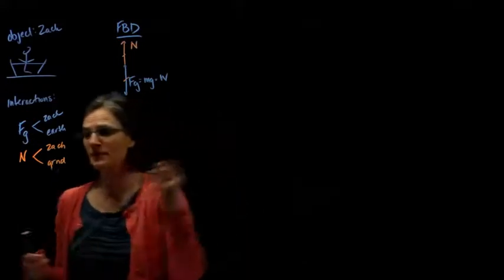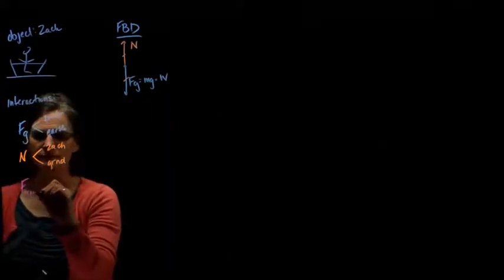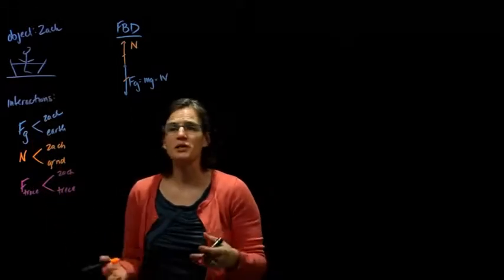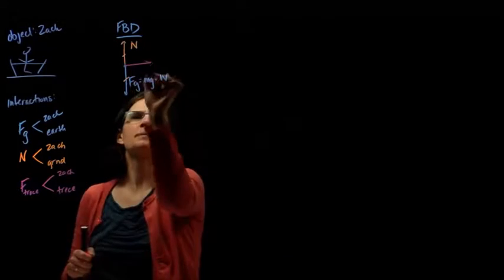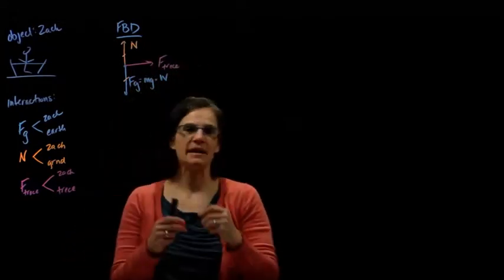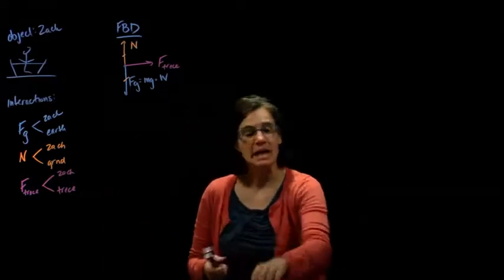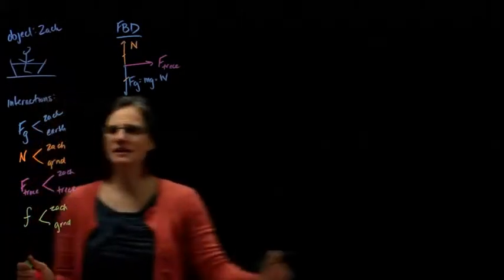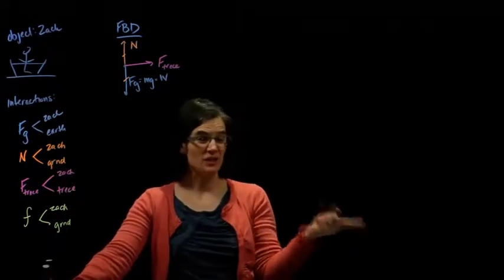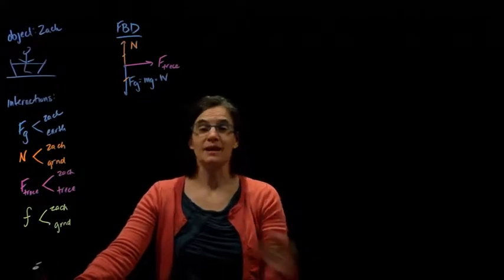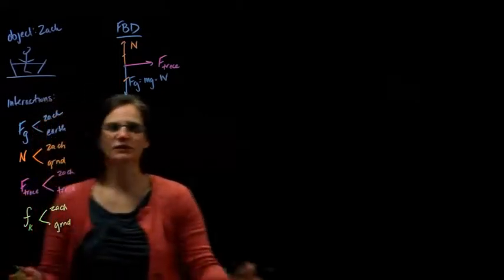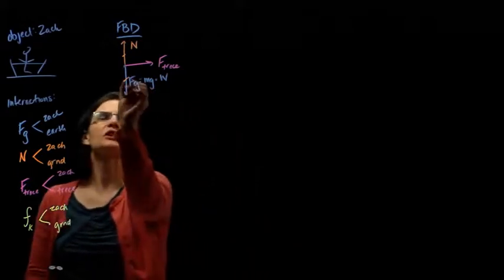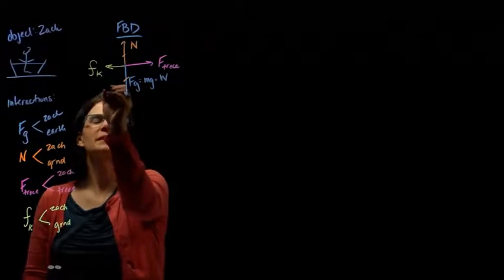Other interactions: Therese is pushing him, so we have the force of his sister — that's between Zach and Therese. If his motion is to the right, then Therese is probably pushing him to the right. The problem also indicates there's friction present, so we have the force of friction between Zach and the ground. We have to decide: is this kinetic or static friction? Since Zach is moving and sliding, this is going to be kinetic friction, which opposes the motion — so it points to the left.